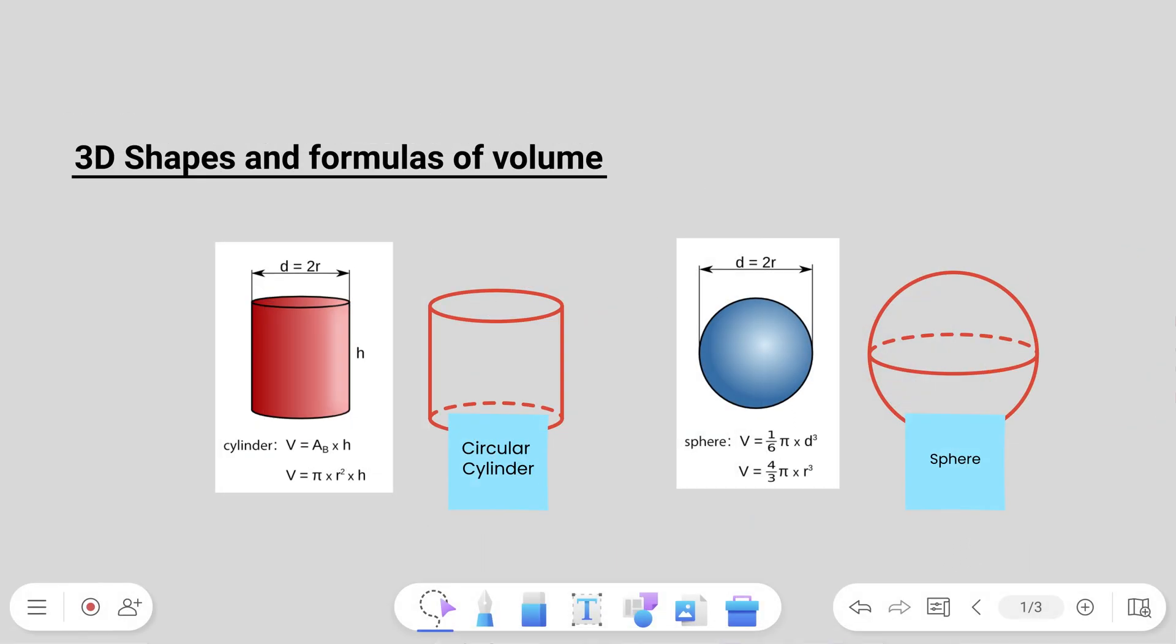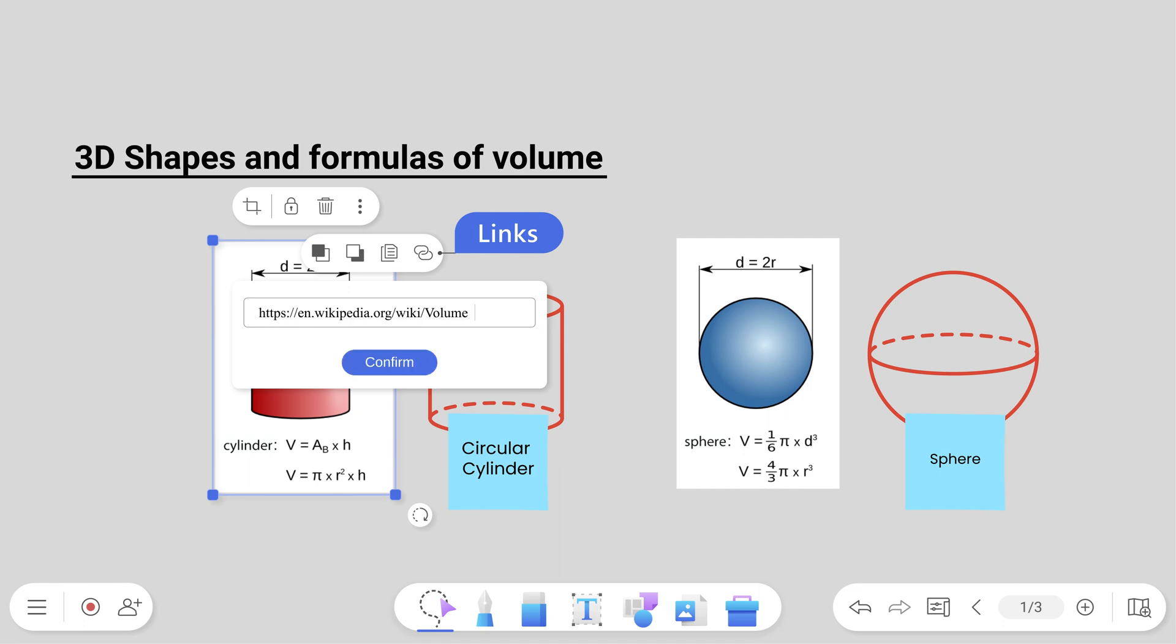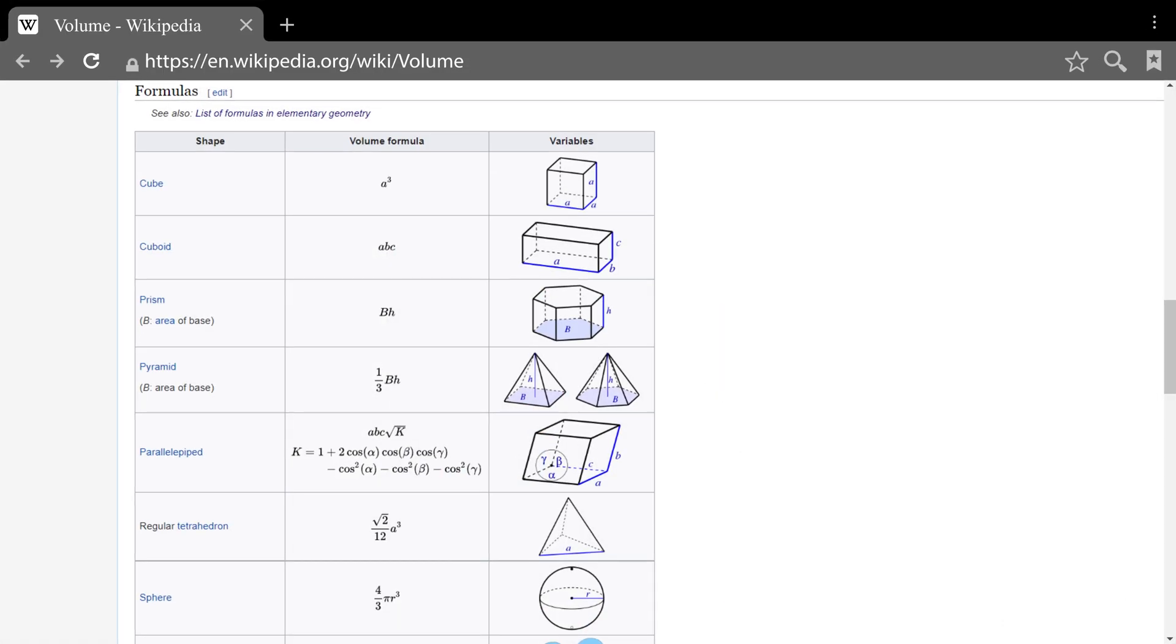For more interactivity, you can add links to any object on the board. Just tap the object, select the Links tool, and then enter the URL. When you tap the linked object, EasyWrite will automatically open the page on your web browser.